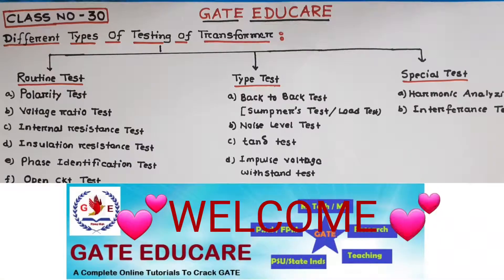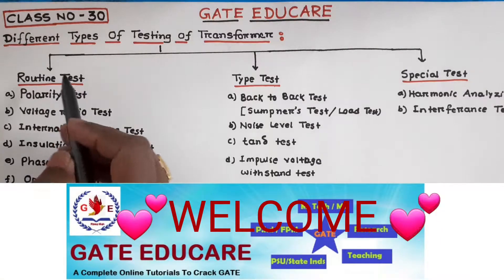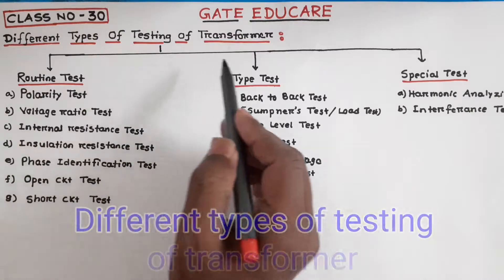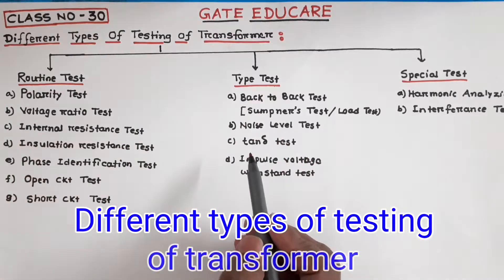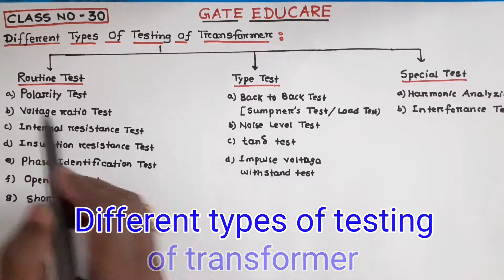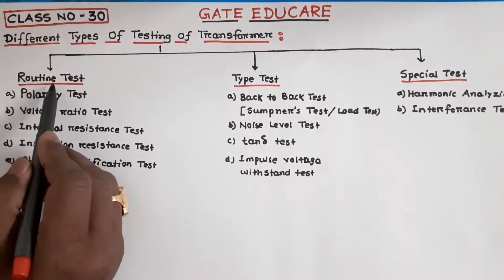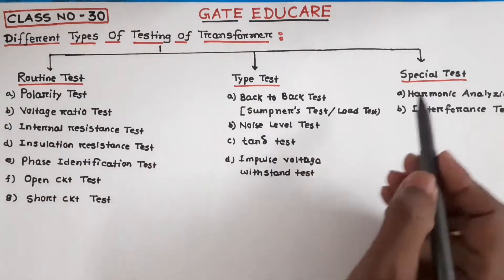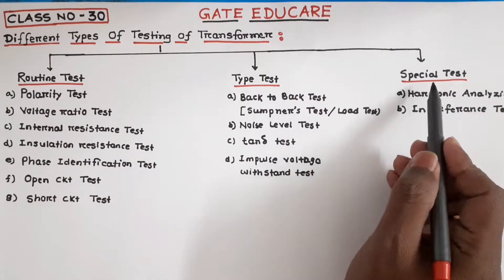Welcome to Get Educare. In this video, the different types of testing of transformers will be explained. Basically, there are three types of testing of transformers: number one, routine test; number two, type test; number three, special test.